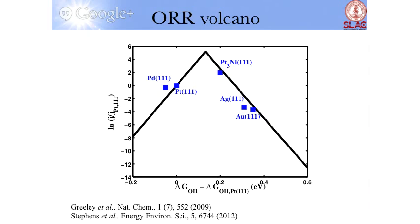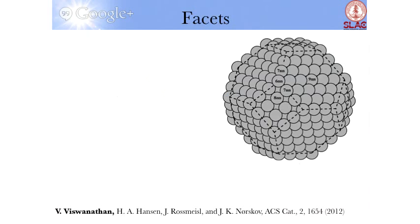Now one can then say, well, this is only one class of materials. This is only the (111) facet, which is the dense facet of a metal. Now what happens when you change the structure on a different facet? So on a nanoparticle, which is where these catalysis processes run.